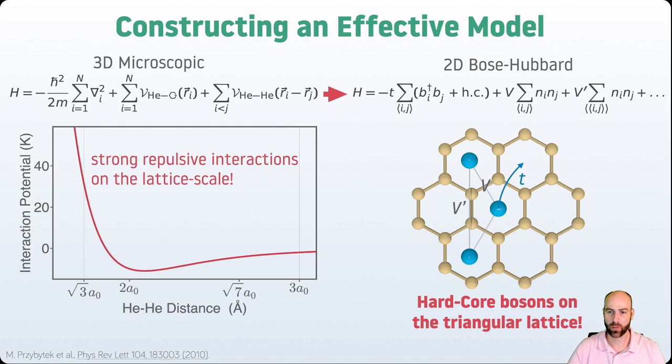But this is a hard-core Bose-Hubbard model. Because of this strong repulsion, the fact that the scale of the interaction is on the atomic scale, we can't actually fit two helium atoms in the same site. This makes things look very different than, for example, in the case of ultra-cold atoms, where one can realize soft-core Bose-Hubbard models.